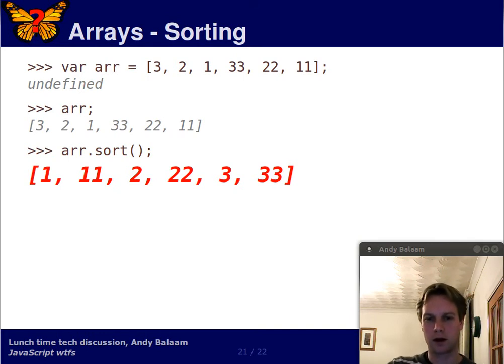You get back an array containing 1, 11, 2, 22, 3, 33. Why do you get that? You told JavaScript to sort this array. What's it done? Well,